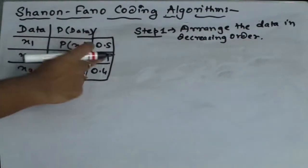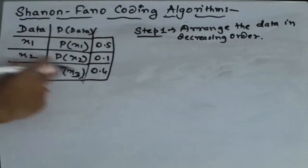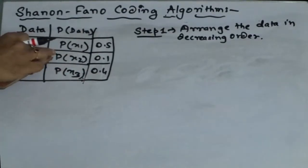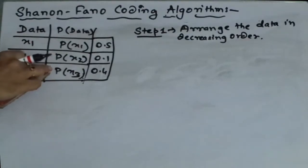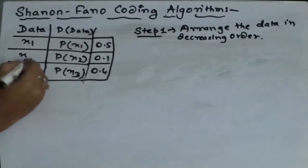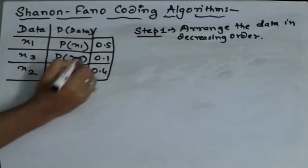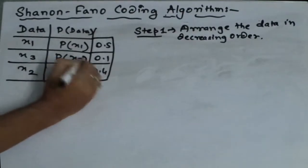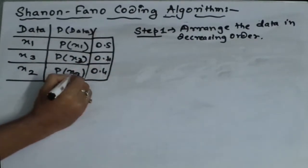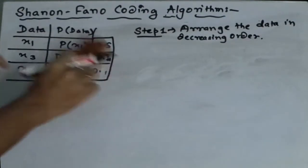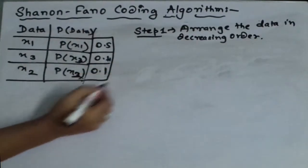What we have to do in this set or what necessary changes we have to do. We have to just rearrange with x2 placed at x3 and x3 placed at x2. So p of x3 will become 0.4 and p of x2 will become 0.1.